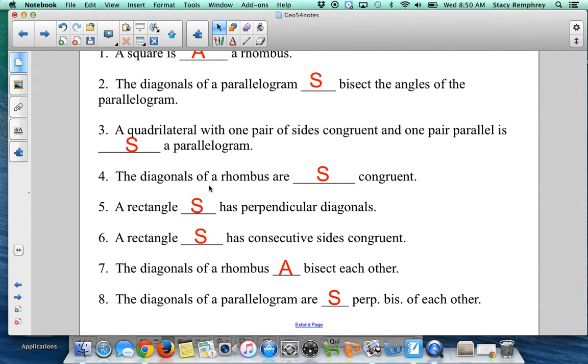The diagonals of a rhombus are sometimes congruent. They're not always going to be congruent. When the rhombus has four right angles, they will be. That's tying it into a square.